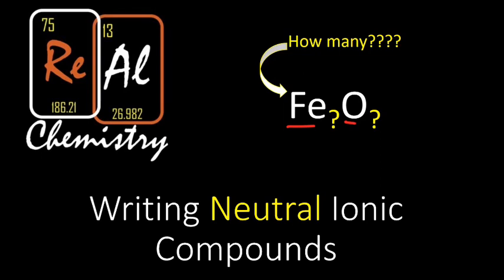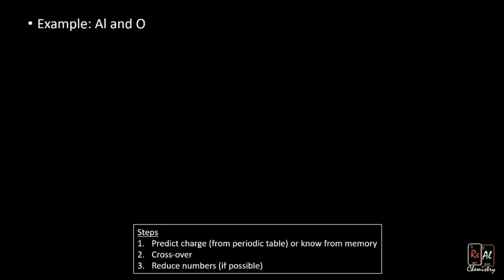Let's work an example. Let's say we have aluminum and oxygen — those are the two elements in our ionic compound, but we don't know how many aluminums or oxygens there are, and that's the whole goal. The first step is to predict the charge on your ions, and you do that from the periodic table.